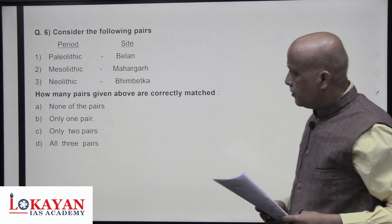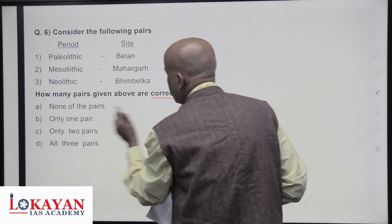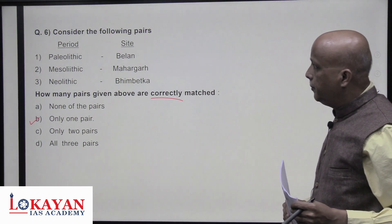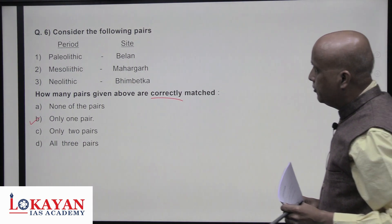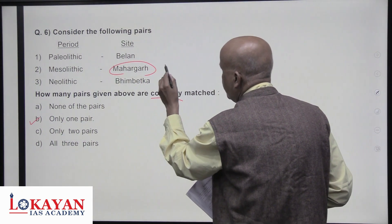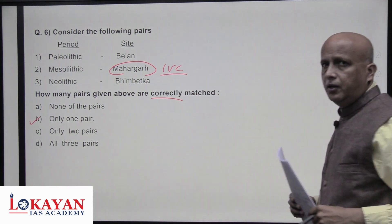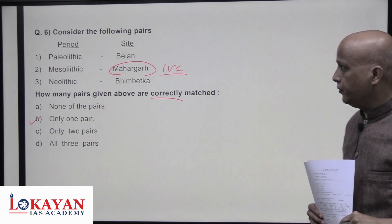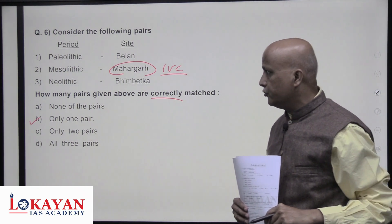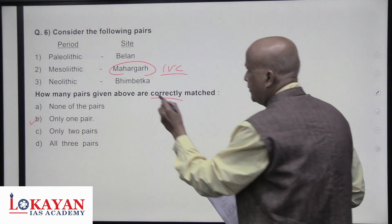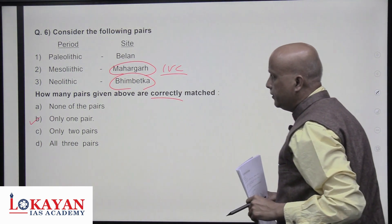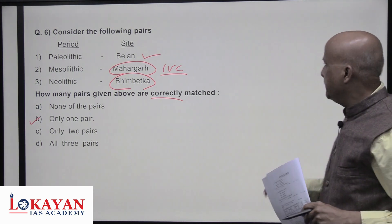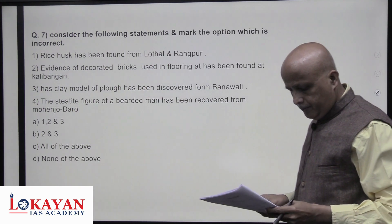Only one pair is correctly matched — Paleolithic: Bhillan, Mesolithic: Bimbetka, Neolithic: Mehrgarh. Mesolithic-Mehrgarh is incorrect because Mehrgarh is the birthplace of IVC (Indus Valley Civilization) and is one of the oldest Neolithic sites in India, located in Baluchistan. Bimbetka is a Mesolithic site. Only the first pair (Bhillan as a Paleolithic site) is correctly matched. Answer is B.